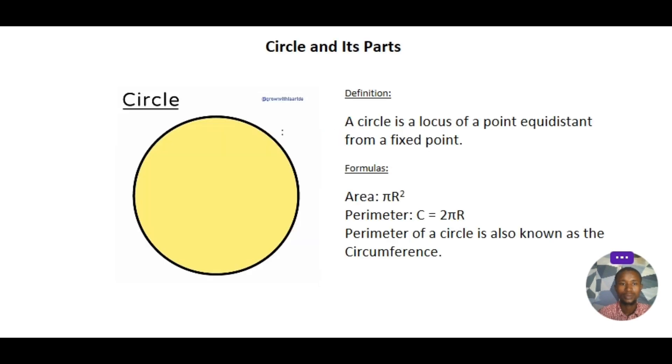A circle is a locus of a point equidistant from a fixed point. So we have a circle using this diagram. The center is fixed and we have a point on the circumference. If there is point A, let's also have another point here, point B. The distance from the center to point A on the circumference must be equal to the distance from the center to point B on the circumference.